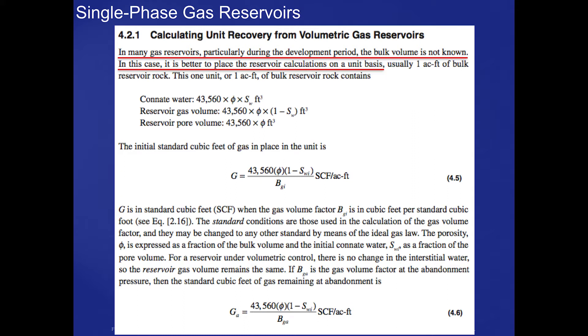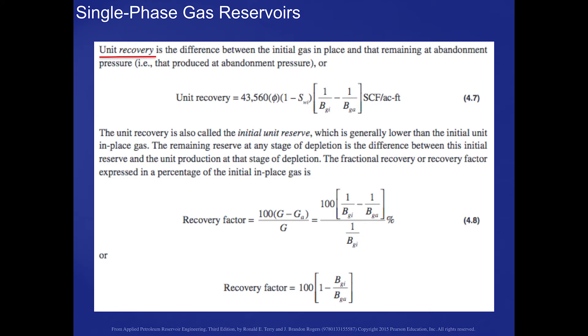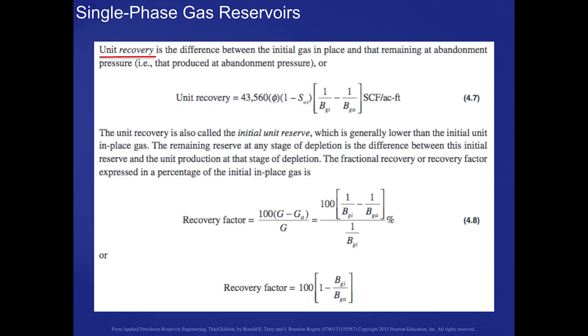For a reservoir under volumetric control, the gas remaining at abandonment is given by equation 4.6, as shown in this slide. If we then look at the unit recovery — which is the difference between the initial gas in place and that which is left at the abandonment pressure — you can see in equation 4.7 an expression for that unit recovery. It's the constant 43,560, which is the square feet in an acre, times the porosity, times one minus the water saturation, times the difference in the formation volume factors at initial pressure and at abandonment pressure. The fractional recovery, or recovery factor, is expressed as a percentage of the initial gas in place, and it's given by equation 4.8.